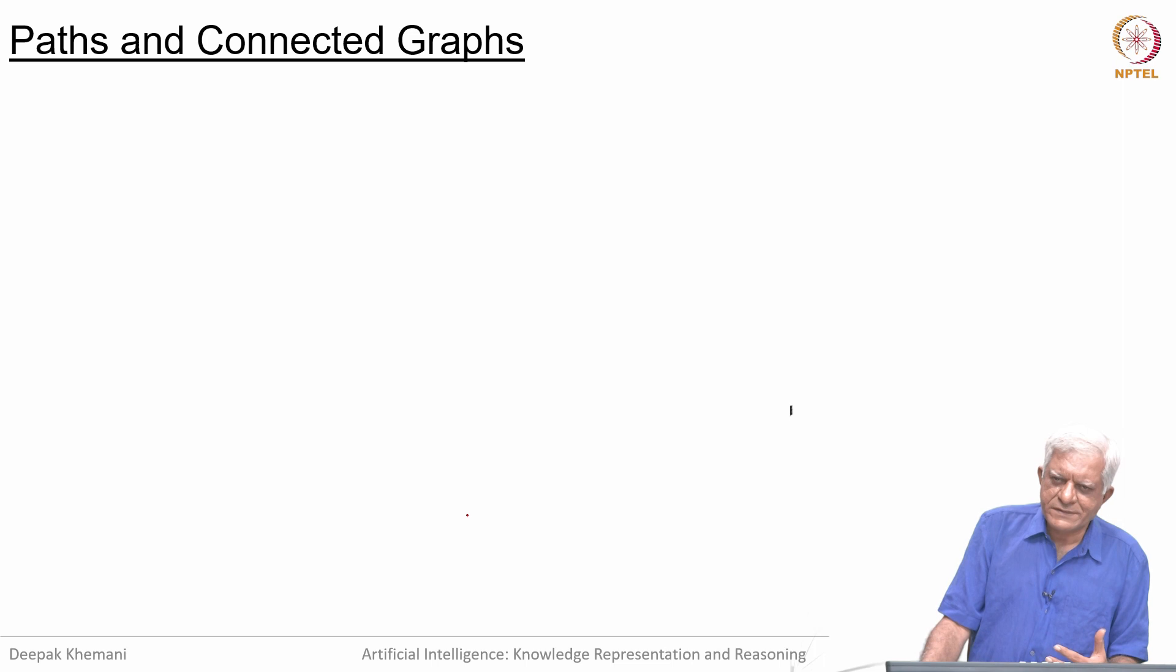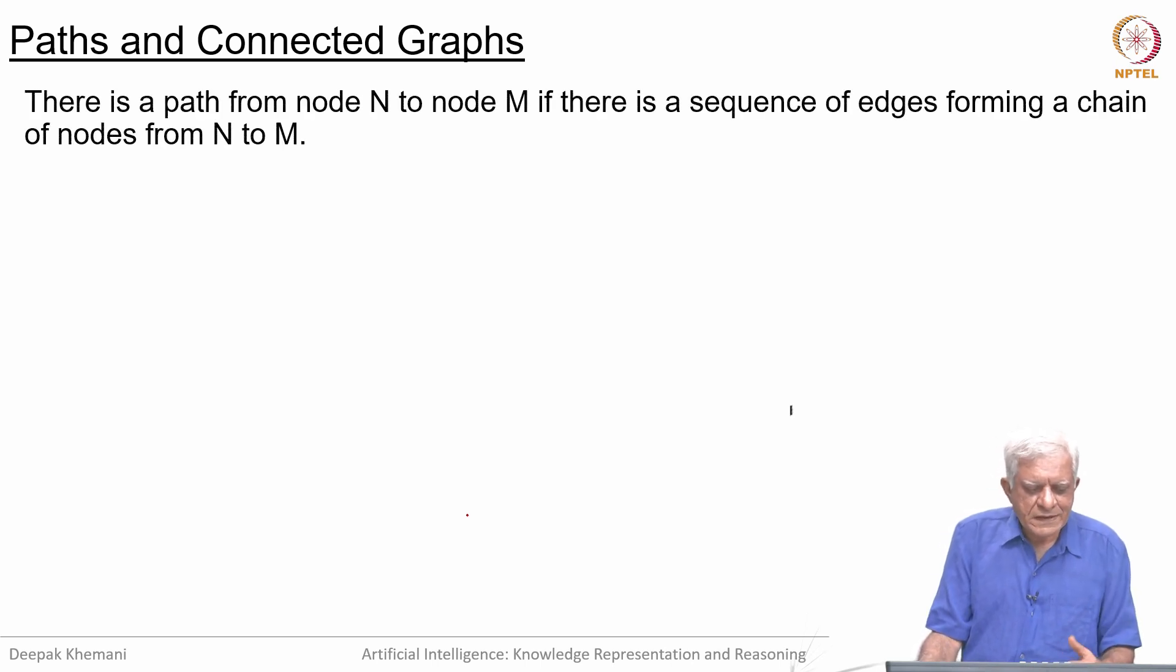When we talk about graphs we often talk about paths. There is a path from a node N to a node M if there is a sequence of edges forming a chain starting at N and going up to M.